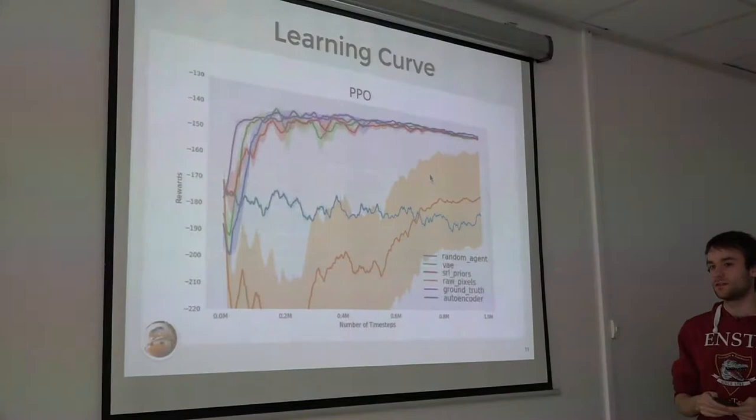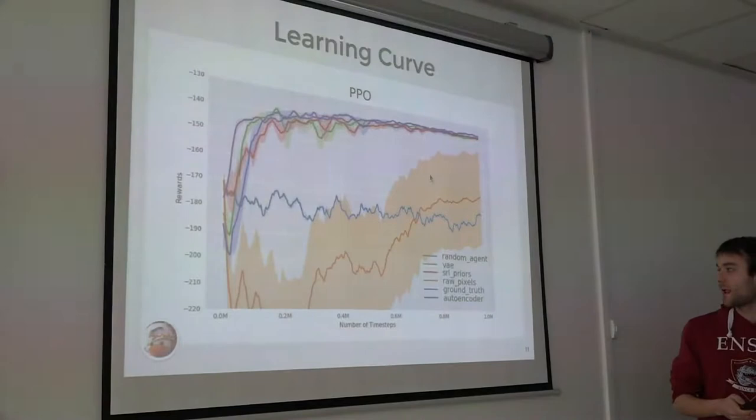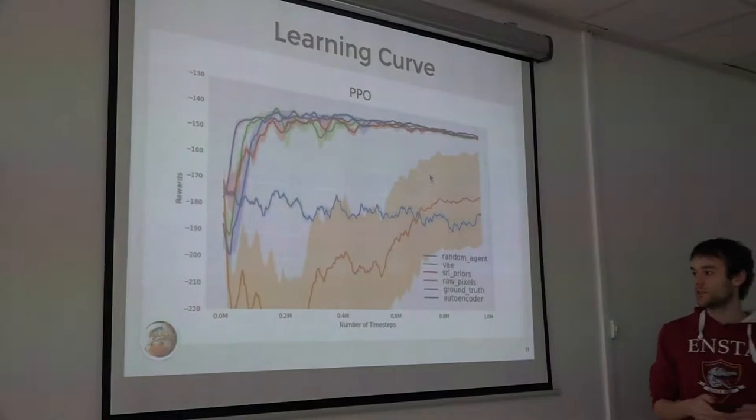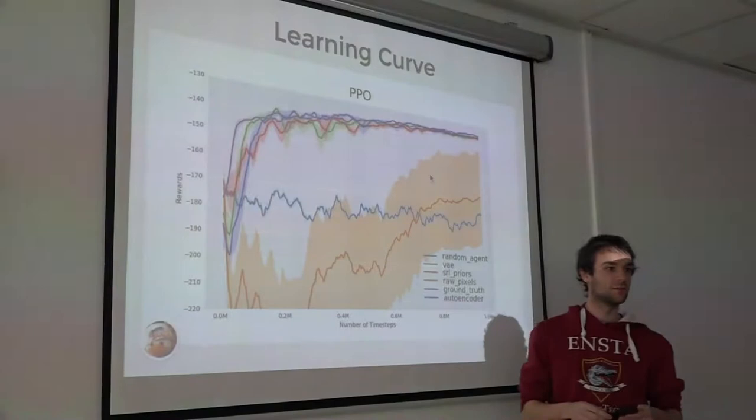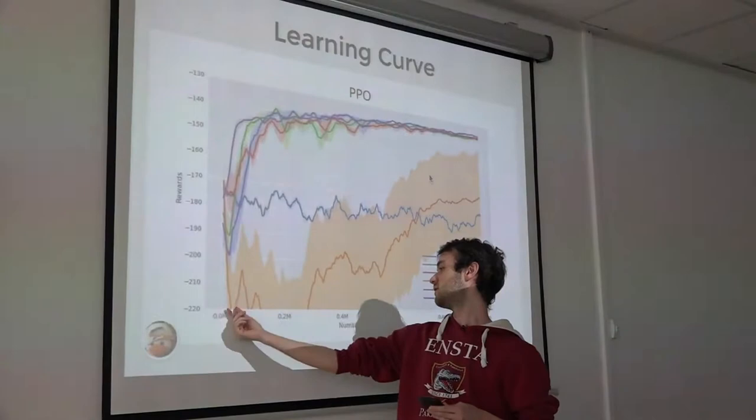How much is the shift needed to account for the state representation learning step? It's about 10,000 steps — actually smaller than that, maybe one percent of the total — so quite small.